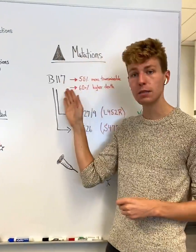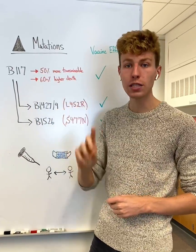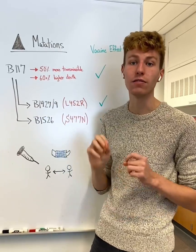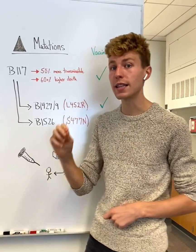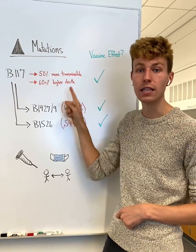But if we look specifically at this B.1.1.7 variant, we see that it's 50% more transmissible and it has a greater than 60% higher chance of death. But data has shown us that the antibodies produced from the vaccines are effective at neutralizing this variant.